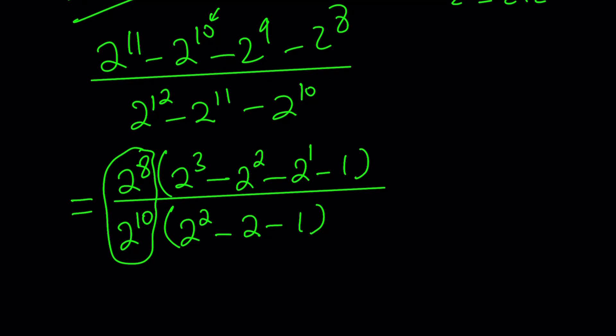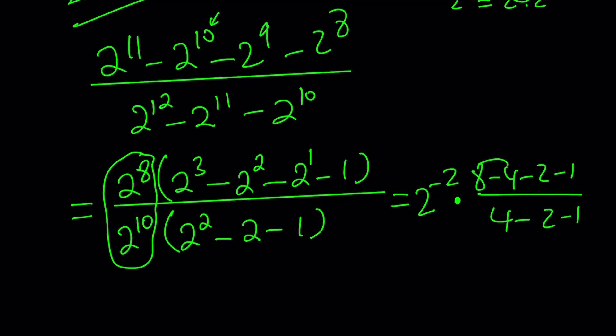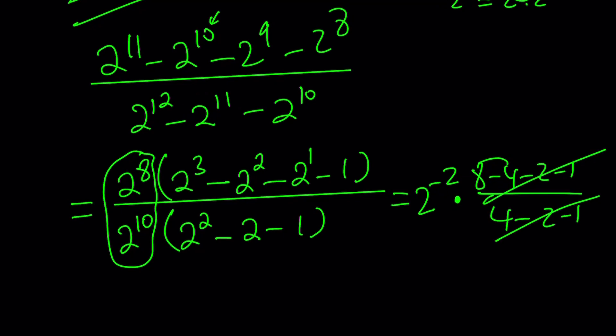But what about the other one? Is this going to give you the same thing? Well, this is going to be 2 to the power negative 2 multiplied by what is in the numerator: 8 minus 4 minus 2 minus 1, and the bottom is 4 minus 2 minus 1. That's kind of interesting because 8 minus 4 is 4, and 4 minus 2 minus 1 is the same as 4 minus 2 minus 1. Or this is 4 minus 2 minus 1, which is 1, and this is also 1. So they're both 1, so they're just going to cancel out. And we're going to end up with 2 to the power negative 2, which is 1 fourth.